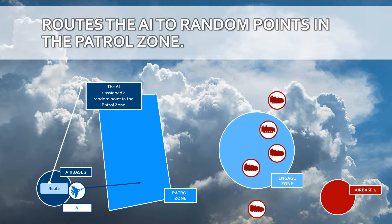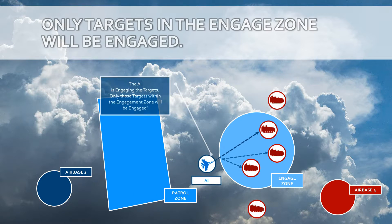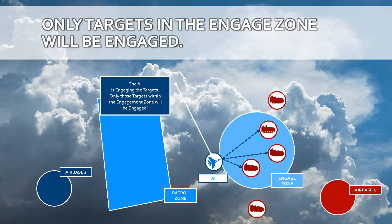The AI will fly at random points within the patrol zone. But when you command the AI to engage, it will fly towards the engagement zone, and upon arrival it knows which targets are within the engage zone if it has detected them.